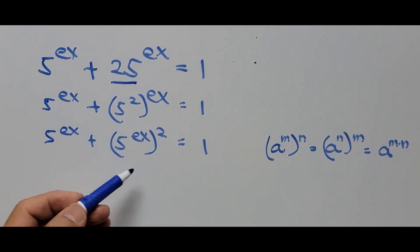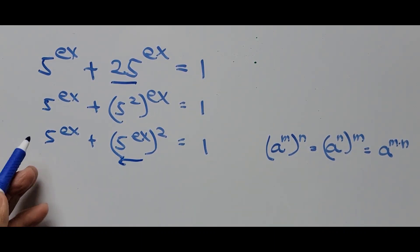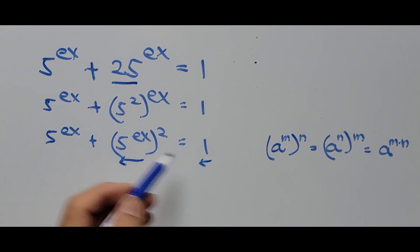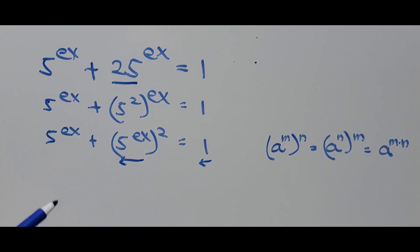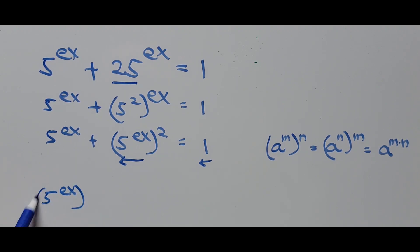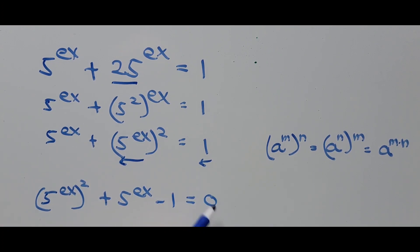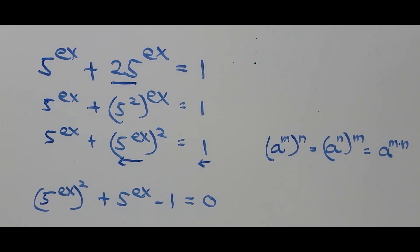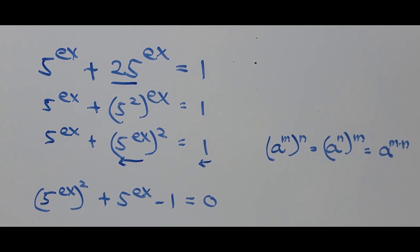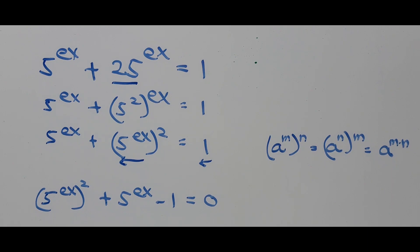From here I rearrange the terms — moving the squared term to the left and bringing the constant to the left side as well, so the equation becomes: 5 to the power of ex, squared, plus 5 to the power of ex, minus 1 equals 0. Notice this is now a quadratic equation because of the exponent 2.